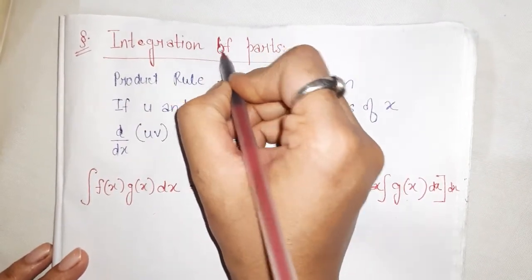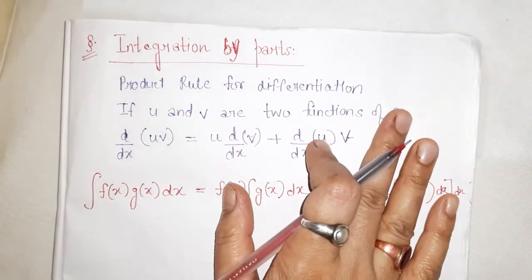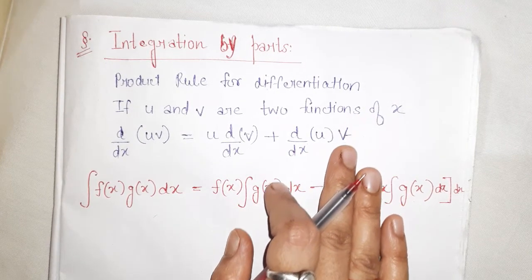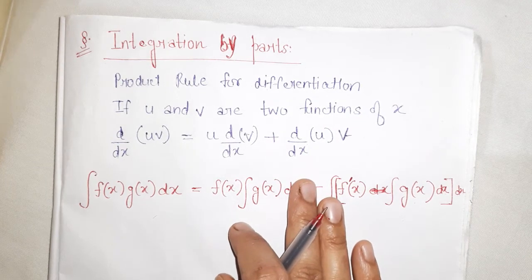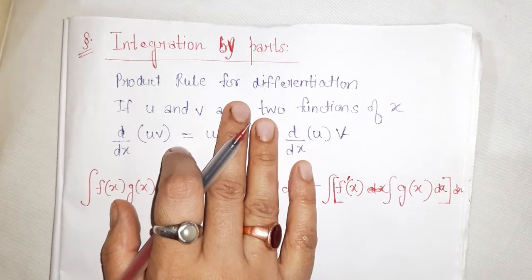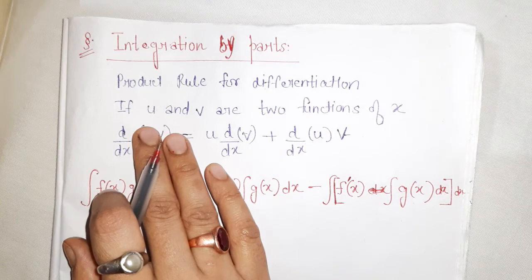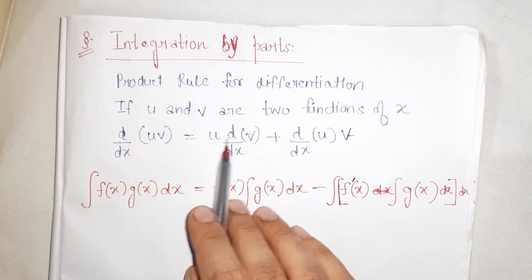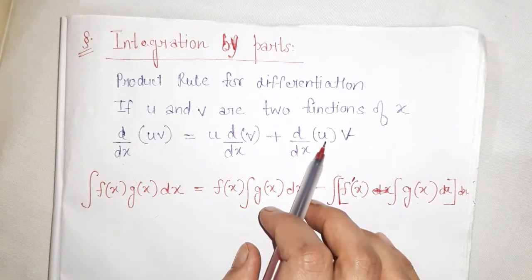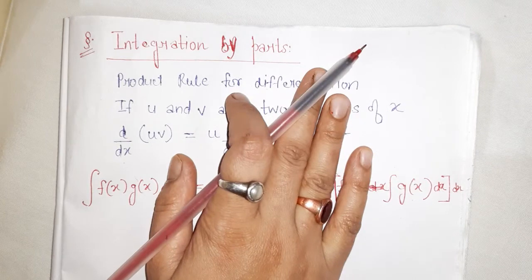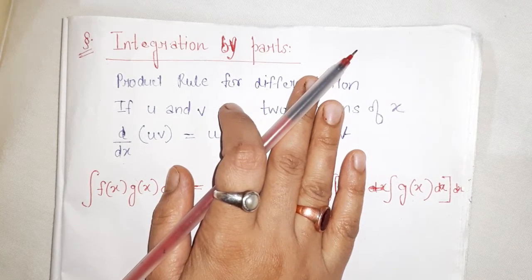Integration by parts is used when we have the product of two functions — when we have to integrate two functions that are in product form. We all know the product rule for differentiation: when we have two functions u and v, both functions of x, the differentiation of uv equals u times the differentiation of v plus the differentiation of u times v.